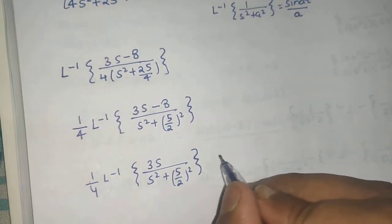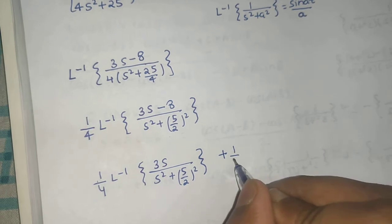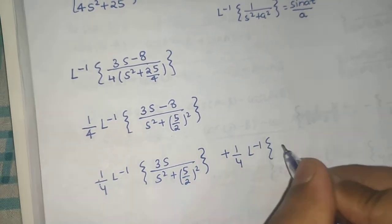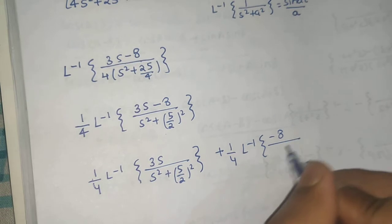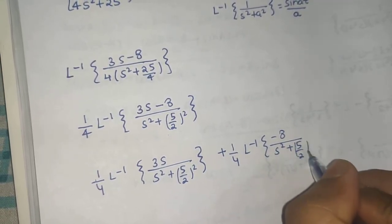And 1 by 4 again I will give to this term, plus 1 by 4 and Laplace inverse of minus 8 divided by S square plus 5 by 2 whole square.